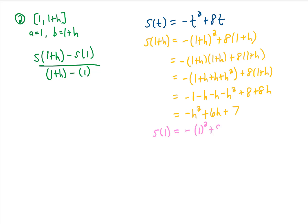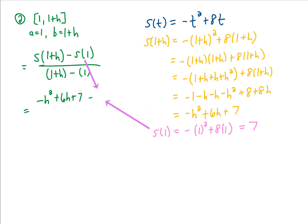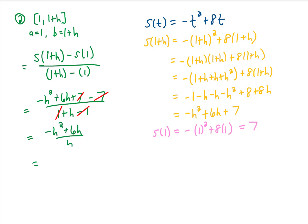We found s of 1 in the previous problem — it's just 7. Now substituting into our average velocity formula, our numerator is negative h squared plus 6h plus 7, minus 7, and our denominator is 1 plus h minus 1. The 7 minus 7 cancels in the numerator and the 1 minus 1 cancels in the denominator. To cancel the h in the denominator, we factor an h out of the numerator, leaving negative h plus 6. That h then cancels with the h in the denominator.